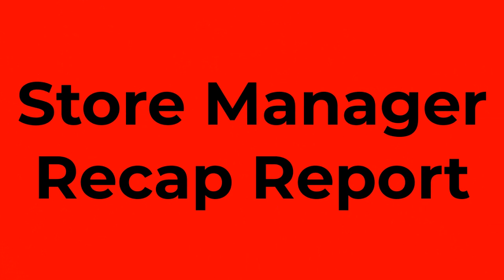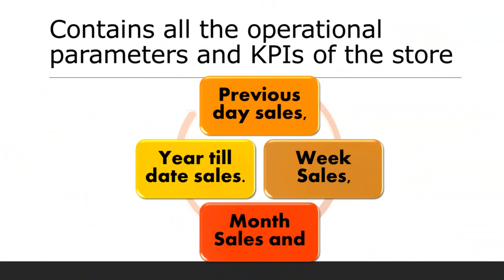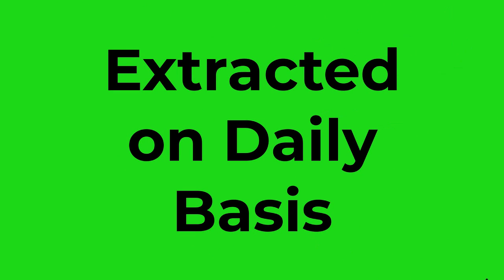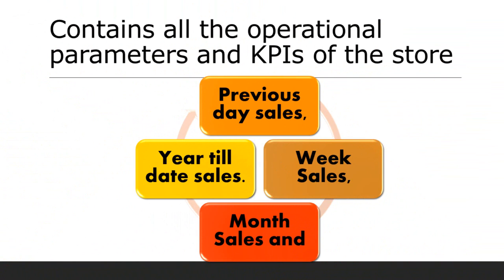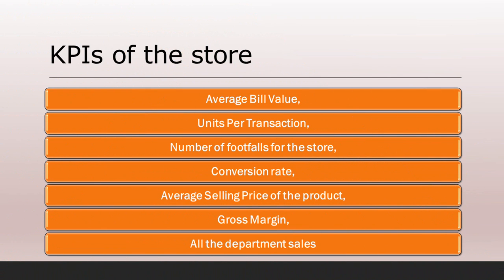The second report is the store manager recap report. This is the most detailed report, containing all the operational parameters and KPIs of the store. It is extracted daily and contains previous day sales, week sales, month sales, and year-to-date sales. This report also includes KPIs such as average bill value, units per transaction, number of footfalls, conversion rate, average selling price of the product, and gross margin, along with all department sales in detail.